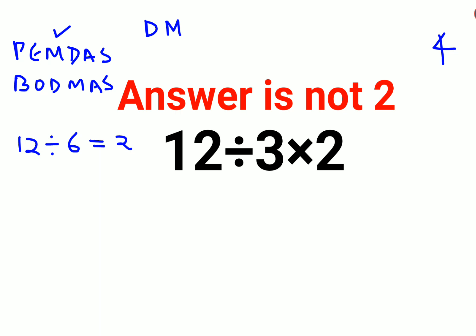People following BODMAS will do division first. That would be 12 divided by 3 is 4, times 2, and the answer comes out to be 8.